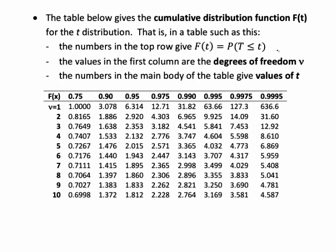The table we're using shows the cumulative distribution function F(t) for the t distribution. That is, the probability of T being less than or equal to some specified value. Across the row we have values of F(t), while down the column we have degrees of freedom, which is sample size minus one.